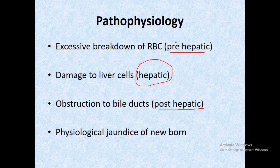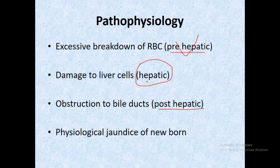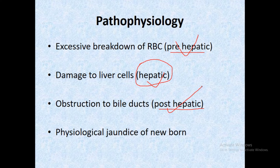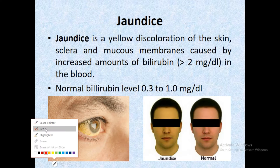In pre-hepatic jaundice, increased bilirubin concentration in blood occurs before liver entry. In hepatic jaundice, liver cells are damaged and unable to conjugate bilirubin. In post-hepatic jaundice, even with normal RBC breakdown and normal liver cells, conjugated bilirubin cannot enter the small intestine due to a gallstone obstructing the bile duct. The next type is physiological jaundice of the newborn.